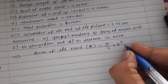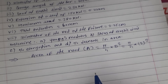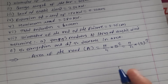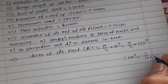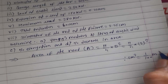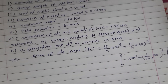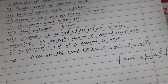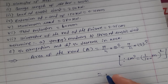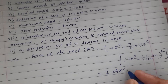Putting d equal to 3 cm: pi by 4 into 3 squared. This 3 value is in centimeter. To convert centimeter into meter: 1 centimeter squared equals 1/100 meter, bracket squared. Centimeter squared is equal to 1 divided by 100 meter, bracket squared — remember that relation. First calculated in centimeter, we get 7.0685 centimeter square.